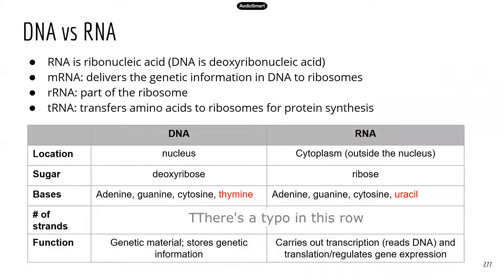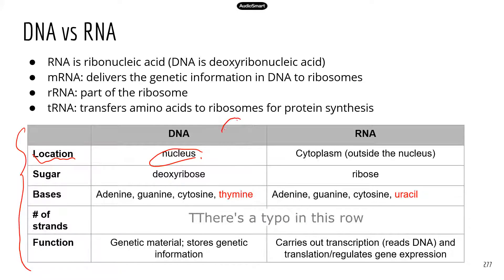Now let's look at the differences between DNA and RNA. I've made a table listing the major differences, including location. DNA can only be found in the nucleus — though you may find DNA in mitochondria as well, since mitochondria do contain genetic material, but for simplicity we'll say DNA is normally found in the nucleus. DNA molecules are too big to get out of the nucleus. The nucleus has a nuclear membrane with nuclear pores, and RNA molecules are much smaller, so messenger RNA can get out of the nucleus.